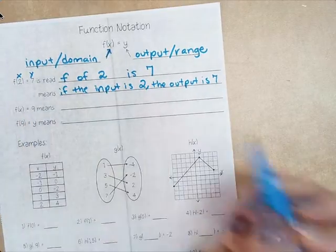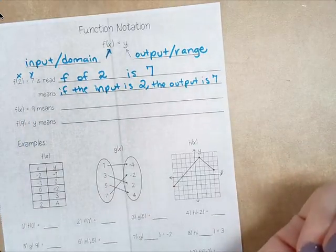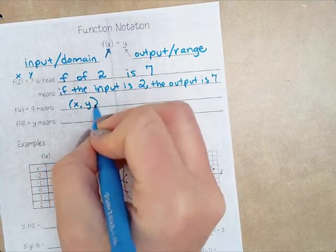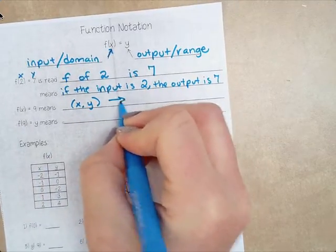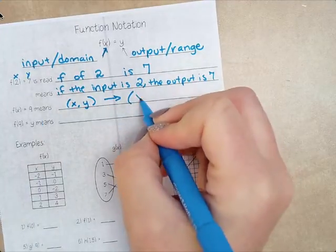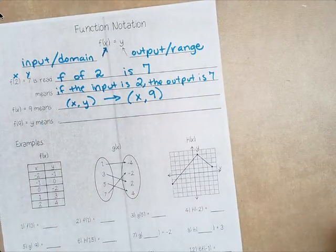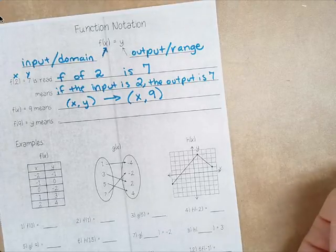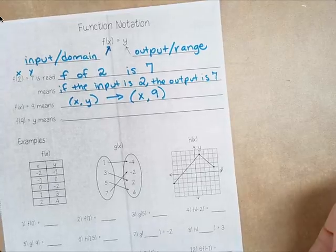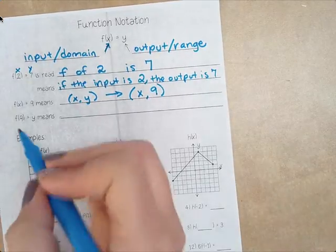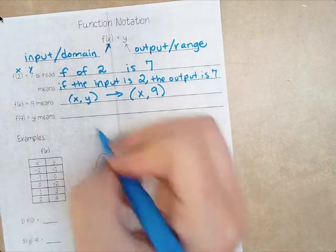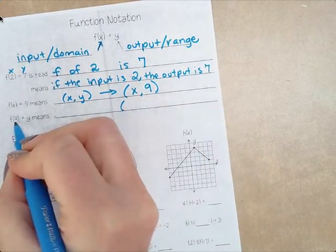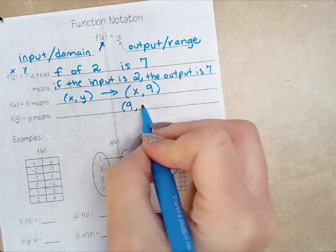f(2) = 9 means, let's just write it as an ordered pair. So ordered pair is (x, y), right? So in this case, our x is just x and the y is 9. Then if we have f(9) = y, that means x is 9 when y is y.